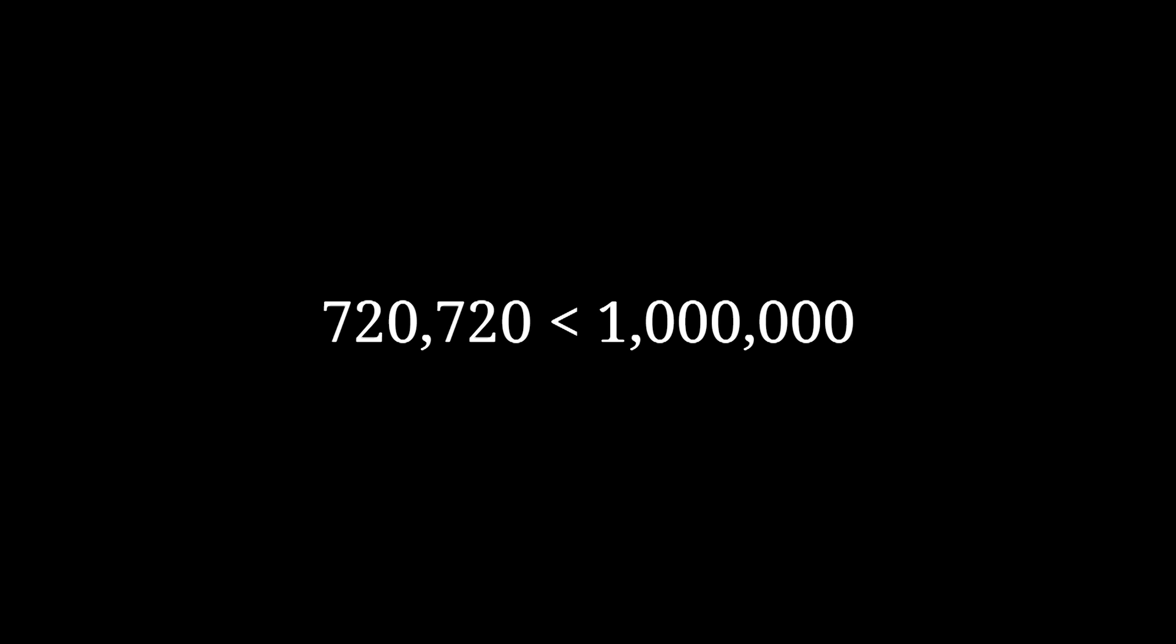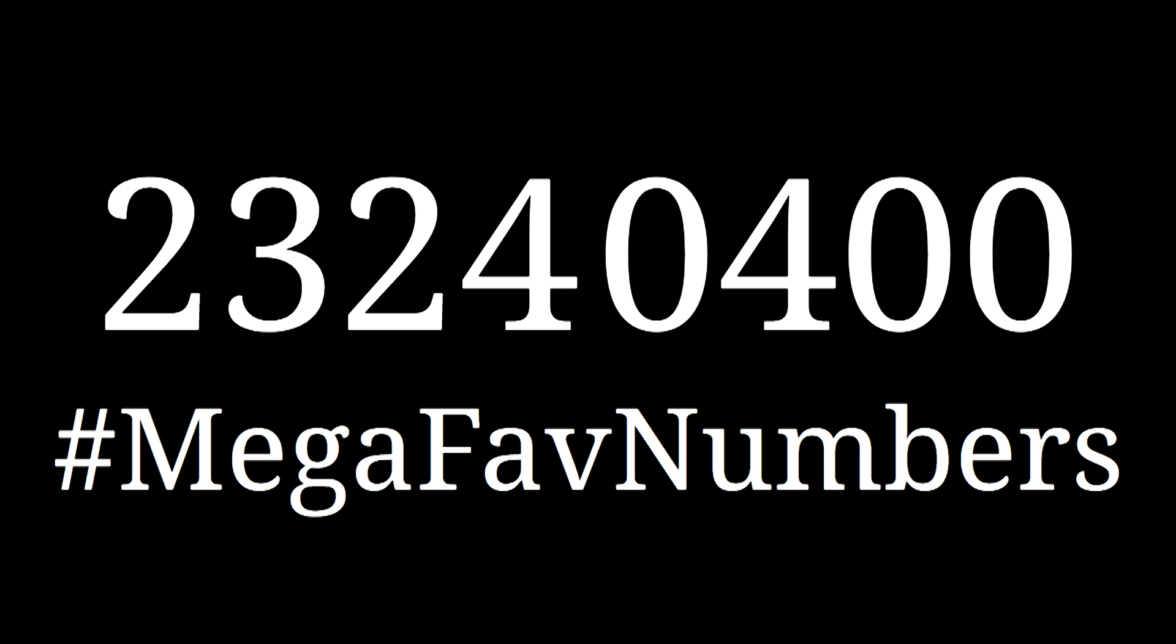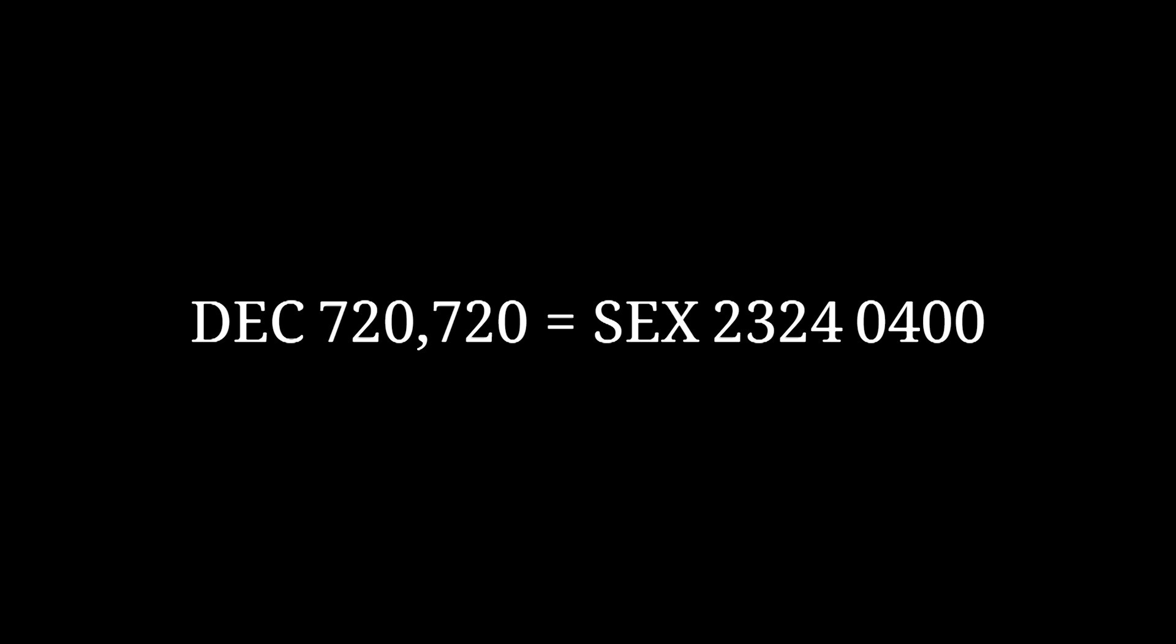But that's not the number in the thumbnail, is it? At what point will I bring up the number 23,240,400? Oh, I guess right now. Okay. So, right, my hashtag mega fave number is, in fact, 23240400. It is not, however, 23,240,400. Surprise, it's base 6. 720,720 in decimal is equal to dozen-3-nif dozen-4-unexion-4-nif in seximal. Is this cheating? Yes. Do I care? Immensely.